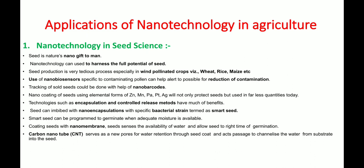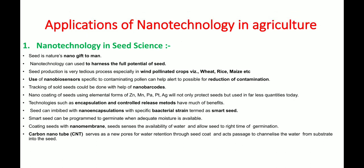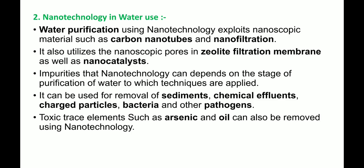Carbon nanotubes (CNTs) have a granular, tube-like structure made up of carbon. These tubes are used for water retention through the seed coat and as a passage to channelize water from the substrate into the seed.